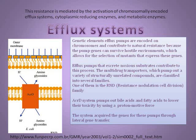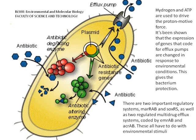Genetic elements called efflux pumps are encoded on chromosomes and contribute to natural resistance because the pump genes can survive hostile environments, which allows for the selection of mutants that express these genes. It is a universal mechanism for a cell to maintain homeostasis. Efflux pumps that excrete noxious substrates contribute to this process. The multidrug transporters, which pump out a variety of structurally unrelated compounds, are classified into several families, categorized by their amino acid sequences. The AcrD system pumps out bile acids and fatty acids to lower their toxicity by using a proton motive force. The system acquired the genes for these pumps through lateral gene transfer and reproduction. Hydrogen and ATP are used to drive the proton motive force. It has been shown that the expression of genes that code for efflux pumps are changed in response to environmental conditions, allowing the bacteria protection.